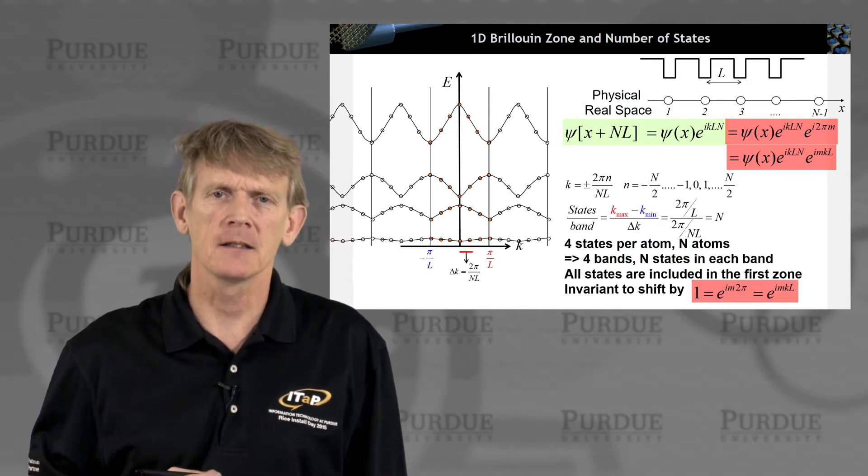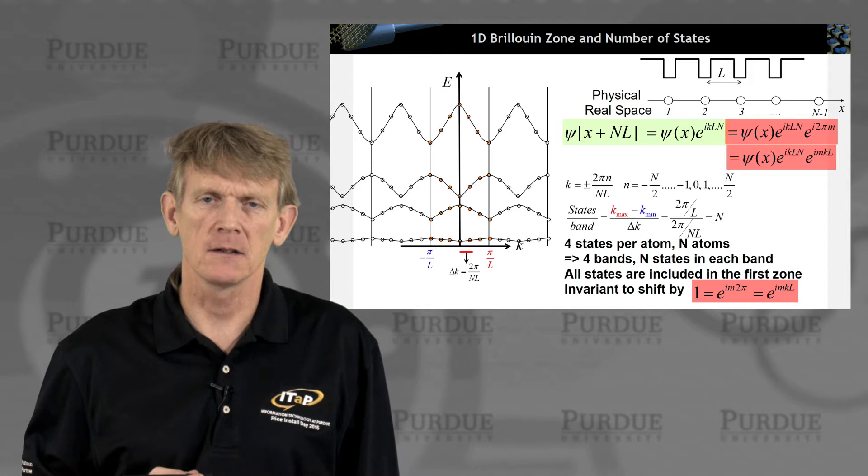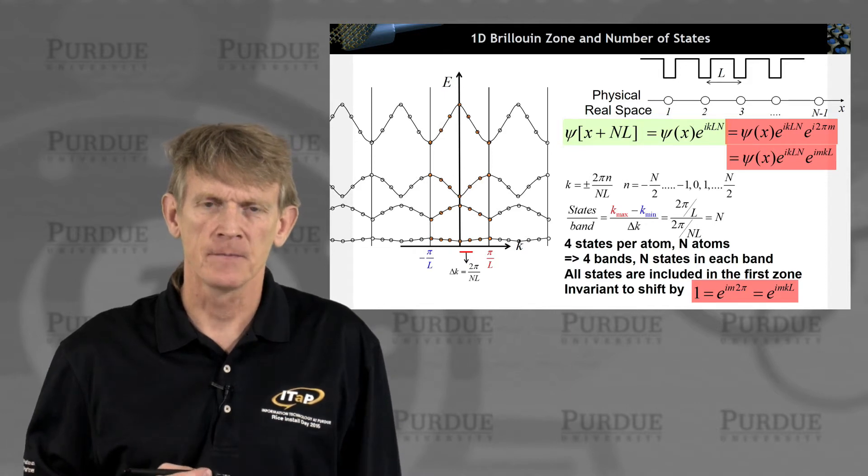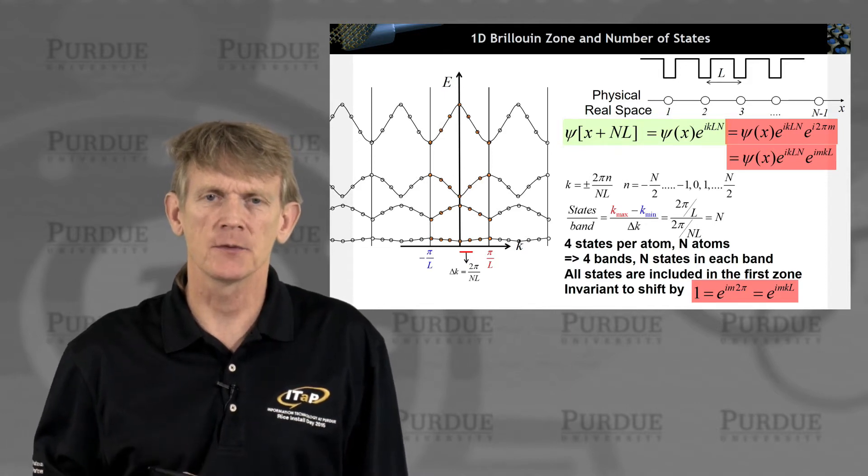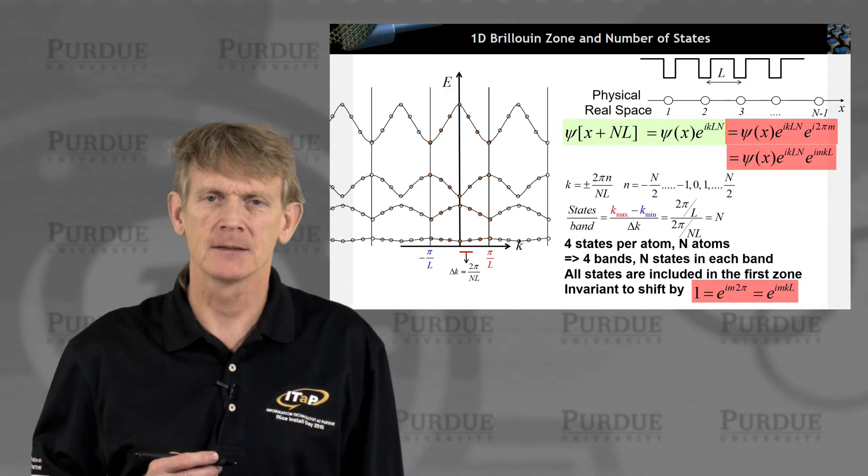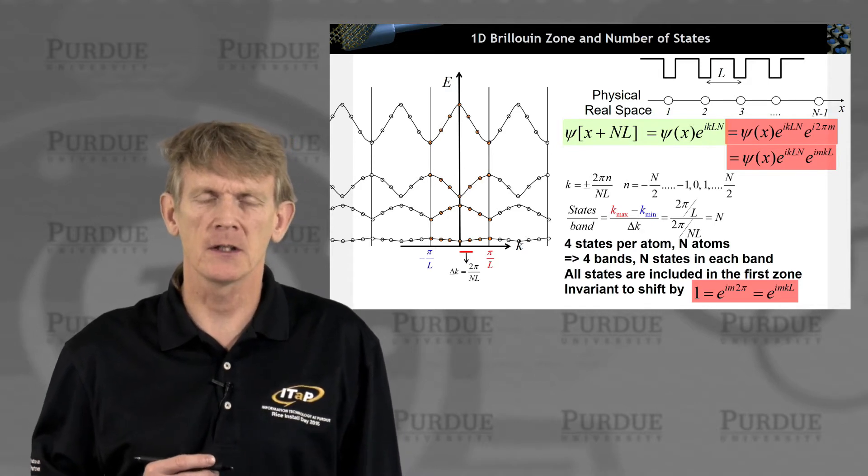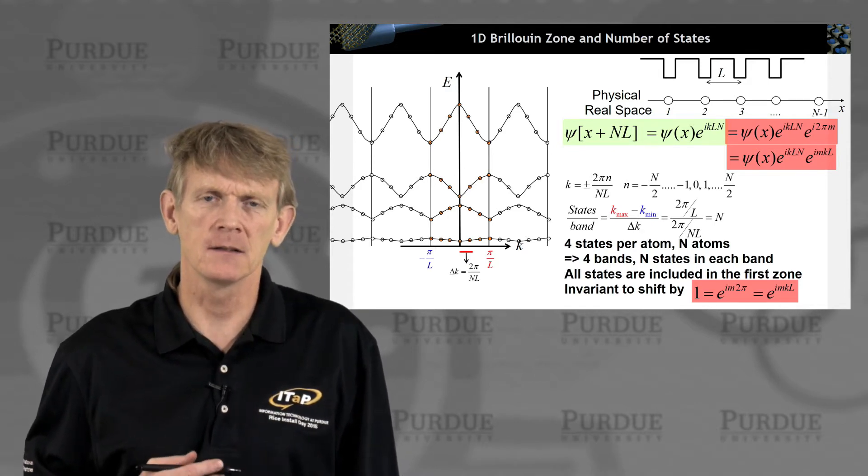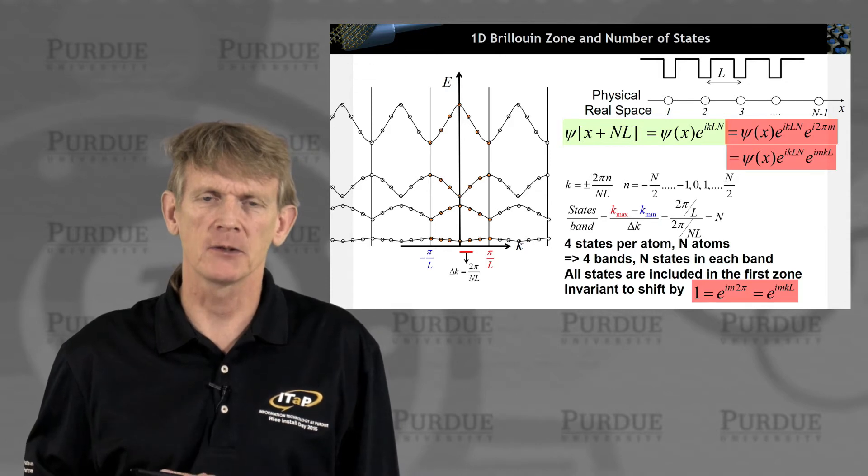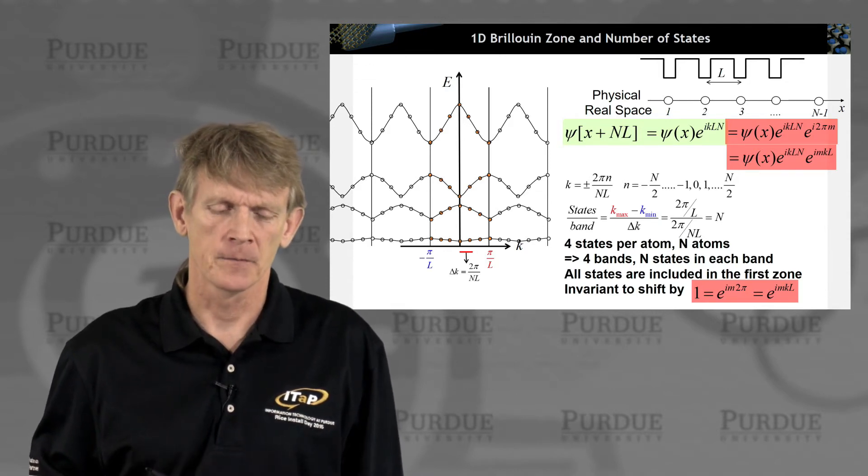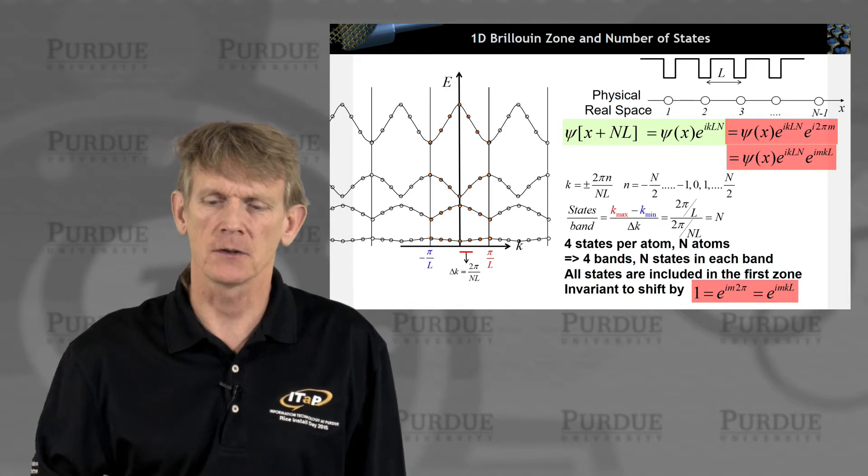And what that means is you can really represent all of the information in one single cell. If we plot, like here, the same cell as the neighboring cells, you can do that. It's sometimes handy to do some of that. But in principle, all of the information that is in the k-space representation is included in the first Brillouin zone.